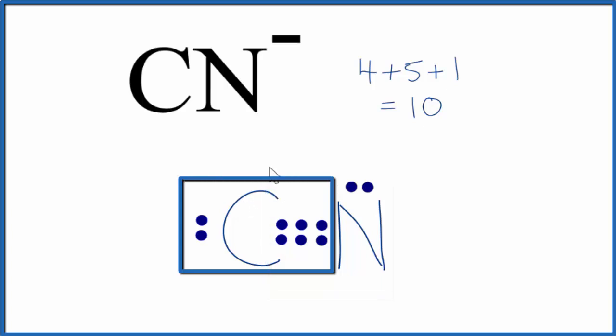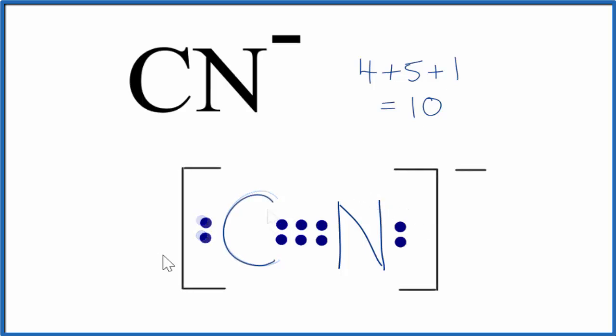This is the Lewis structure for CN minus, the cyanide ion. Let's move this down here just for symmetry. We could also represent this triple bond here with three lines. That would be appropriate as well. Since it is an ion, we should put brackets and a negative sign outside. And that's the Lewis structure for CN minus.